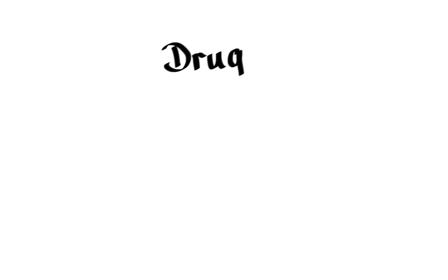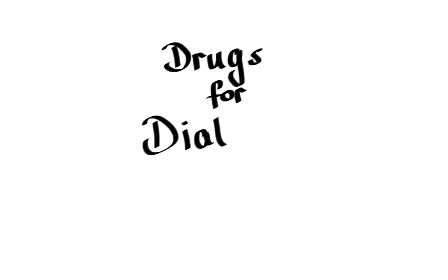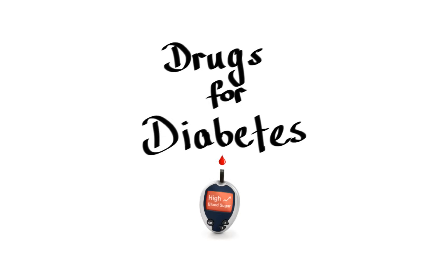In this lecture we are going to cover drugs used for diabetes. Diabetes mellitus is a chronic disorder characterized by high levels of blood glucose that result from either inadequate insulin production or resistance of the body's cells to the action of insulin.